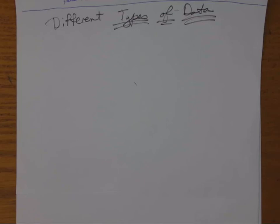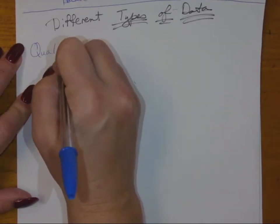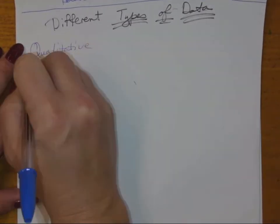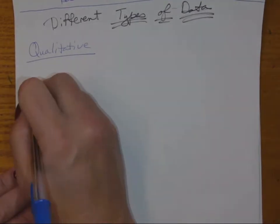All right everybody, we're going to talk about different types of data. Earlier in the class we talked about different types of studies, like the difference between observational and experimental. Now we're going to talk about different data that we can gather in our studies. In general, there are two basic types of data. One is qualitative, and the other one is quantitative.